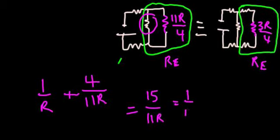But that's equal to 1 over Re, so we simply need to flip that to figure out the equivalent resistance, which works out to be 11R over 15.